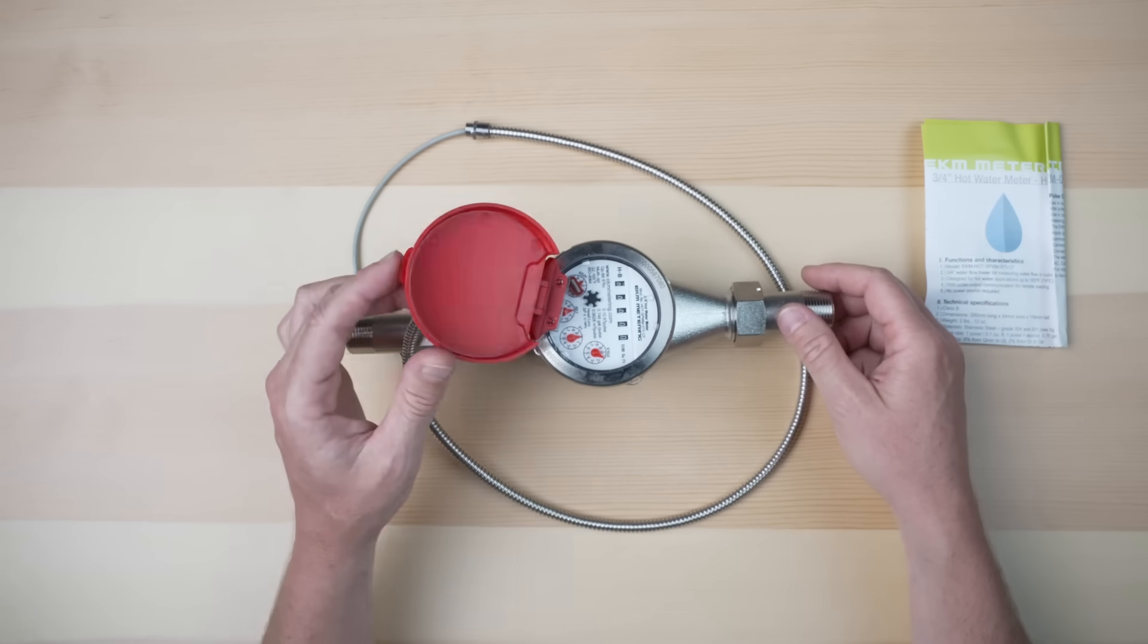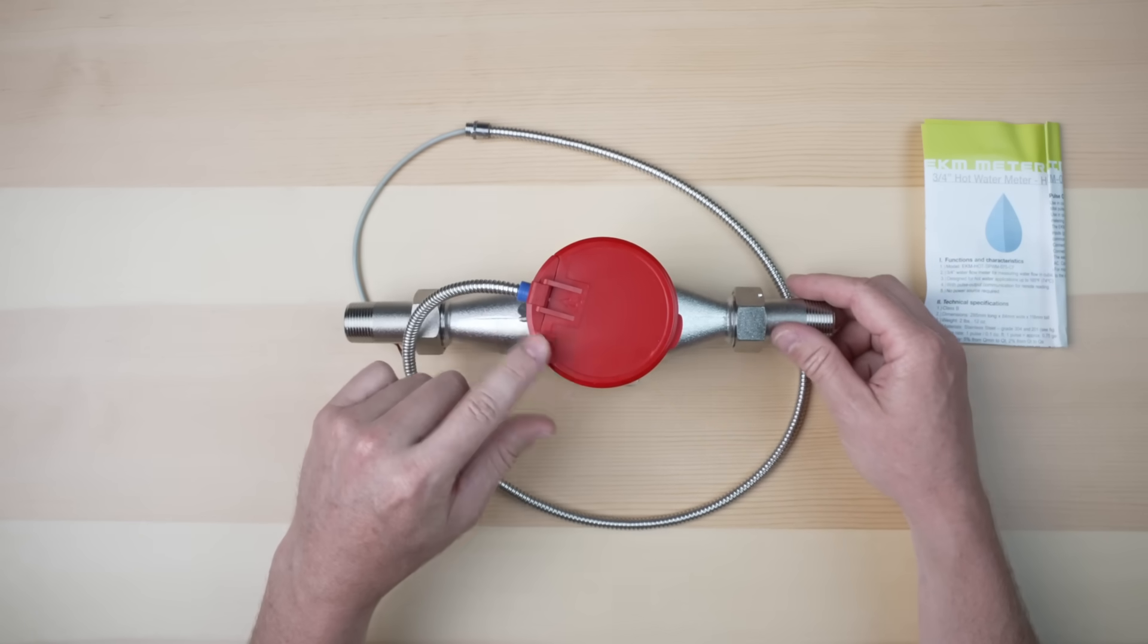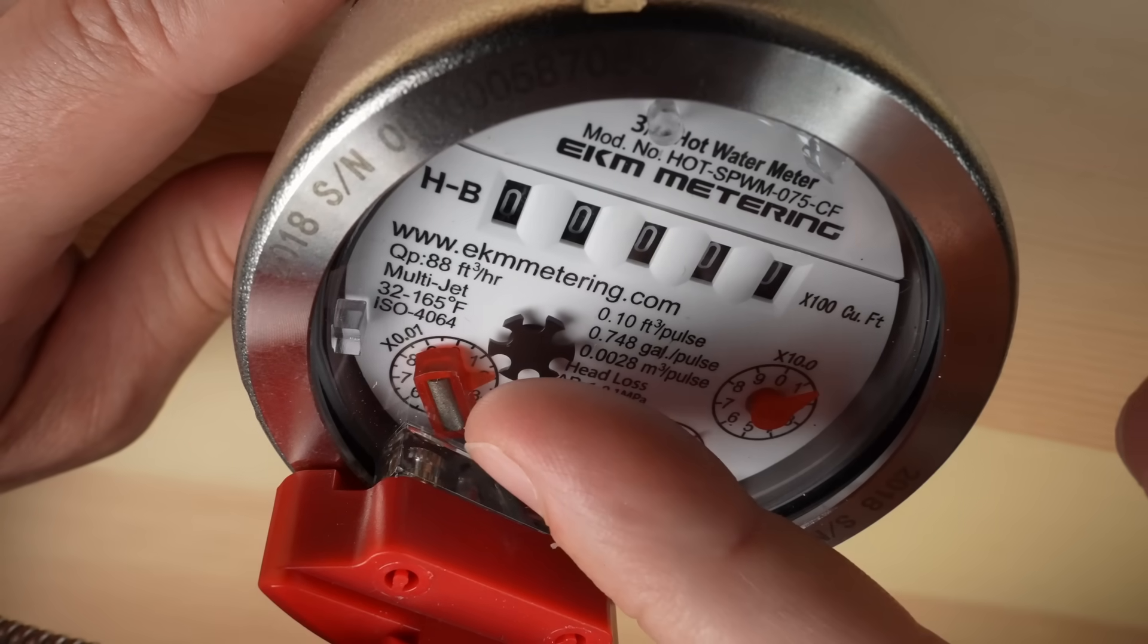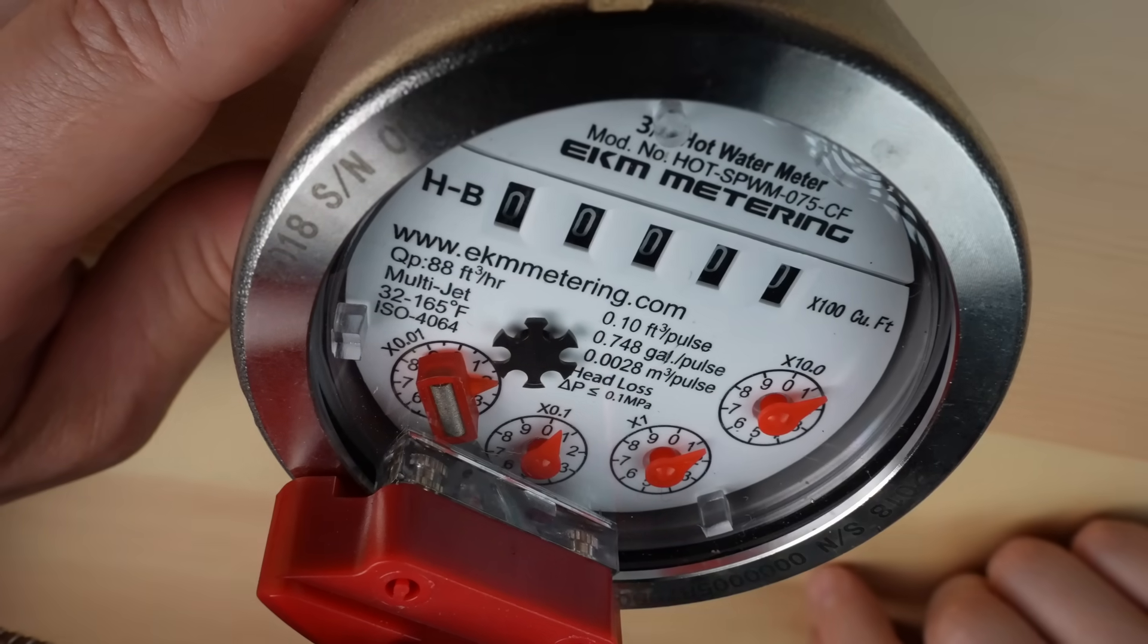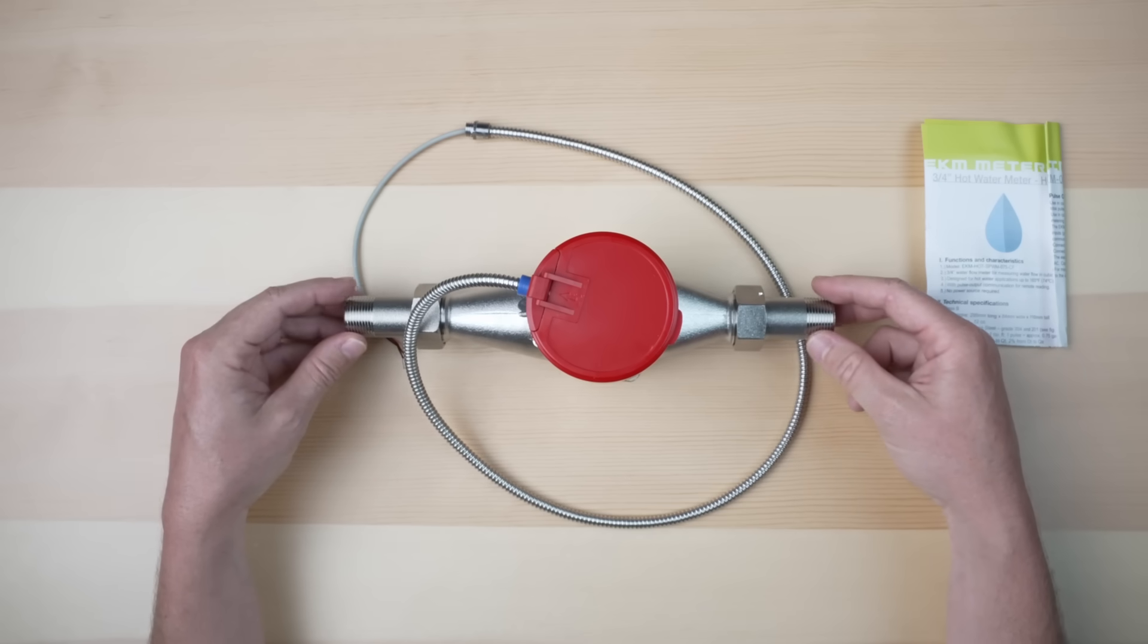The meter is remote readable via its pulse output, which is part of the lid mechanism. It generates a pulse for every tenth of a cubic foot that flows through the meter.